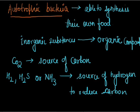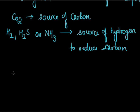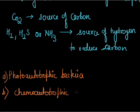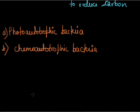They form organic compounds. On the basis of the energy they derive, autotrophic bacteria are categorized into two different forms: the first one is photo-autotrophic bacteria, and the second one is chemo-autotrophic bacteria. Photo-autotrophic bacteria utilize light energy, and chemo-autotrophic bacteria utilize chemical energy. We will study them one by one.